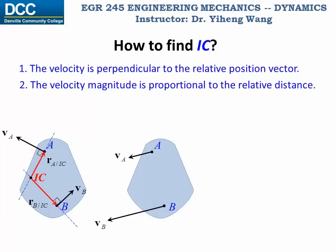In the second case, if you know the direction of the velocities of two points in this rigid body but the two velocity vectors are parallel to each other, then you know for sure that if you draw the line perpendicular to both of these two velocity vectors, the instantaneous center of zero velocity must be on this line, because that's the only way the first condition can be satisfied. But if at the same time you also know the magnitudes of these two velocities, then you can determine the location of the instantaneous center of zero velocity through similar triangles. As you can tell, the instantaneous center of zero velocity does not have to be within this rigid body — it can be beyond this rigid body.